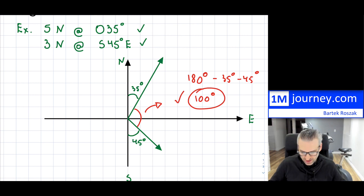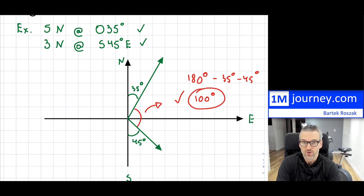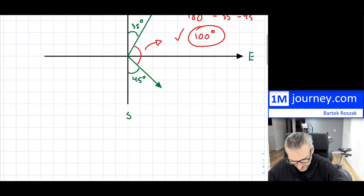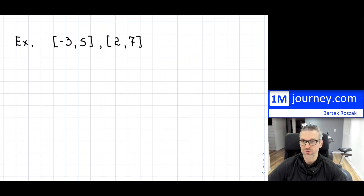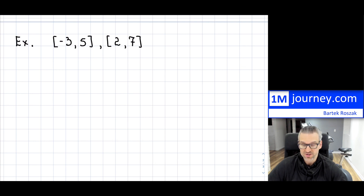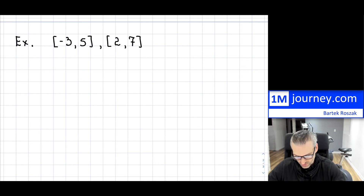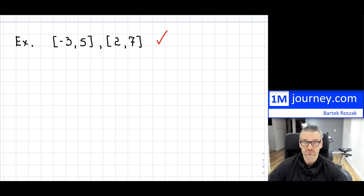That is how we would easily find it if we are given the vectors in their geometric form. But what happens if you're not given the vectors in geometric form? What happens if you are given the vectors in Cartesian form — Cartesian vectors like this? If you want to find the angle in between, we can graph this and find out the angle with a little bit of work, but if you know the dot product, finding the angle between two Cartesian vectors is actually relatively simple.